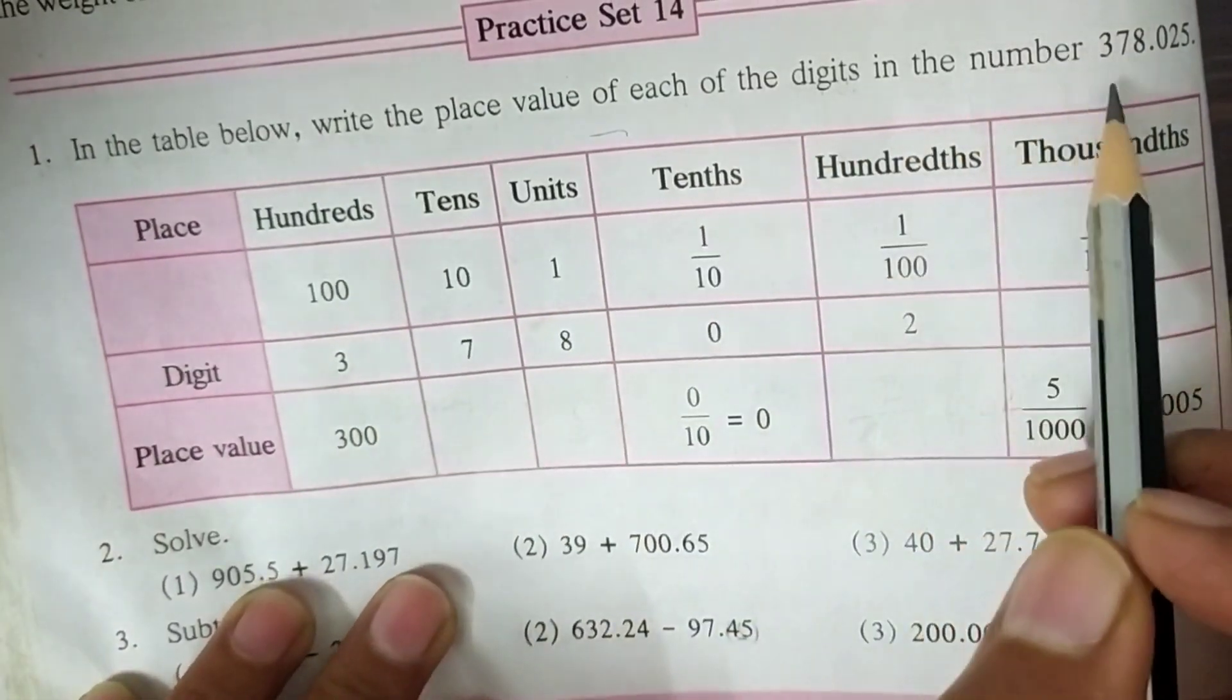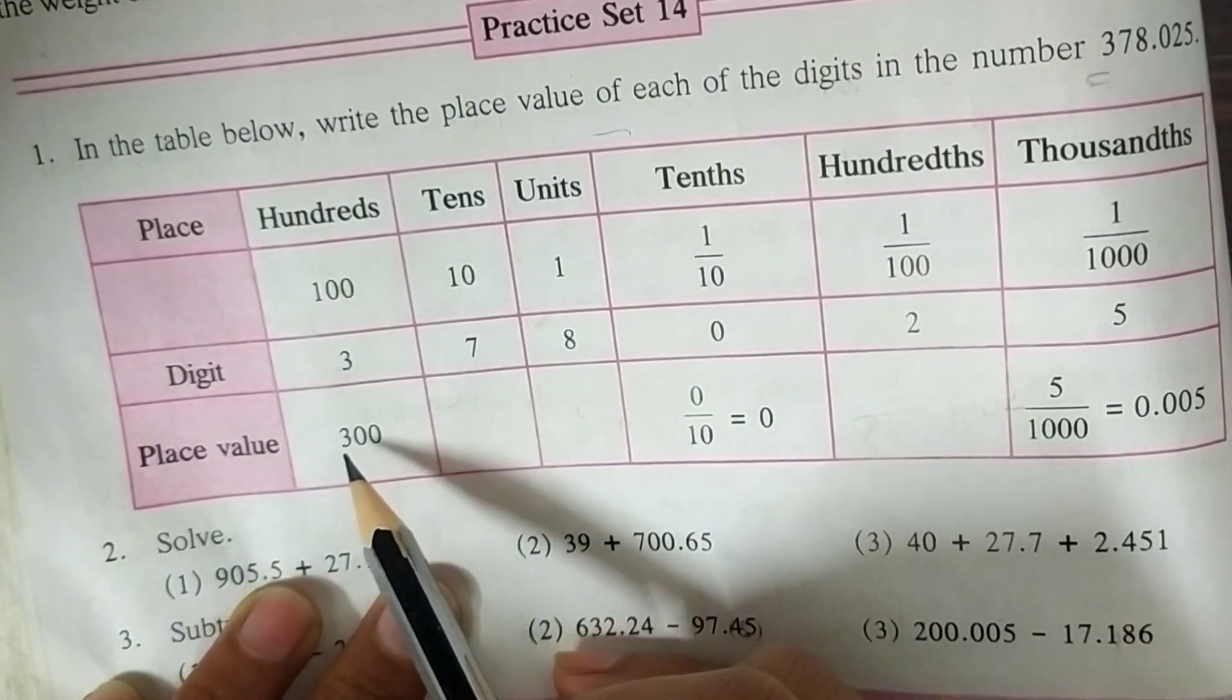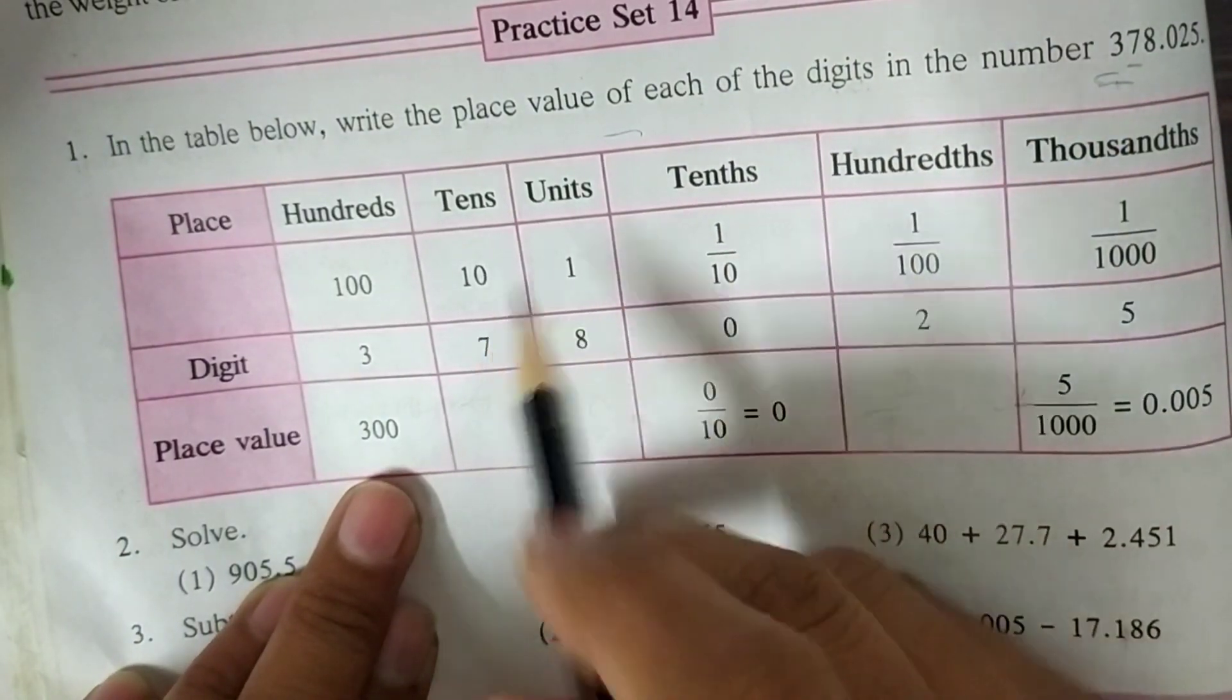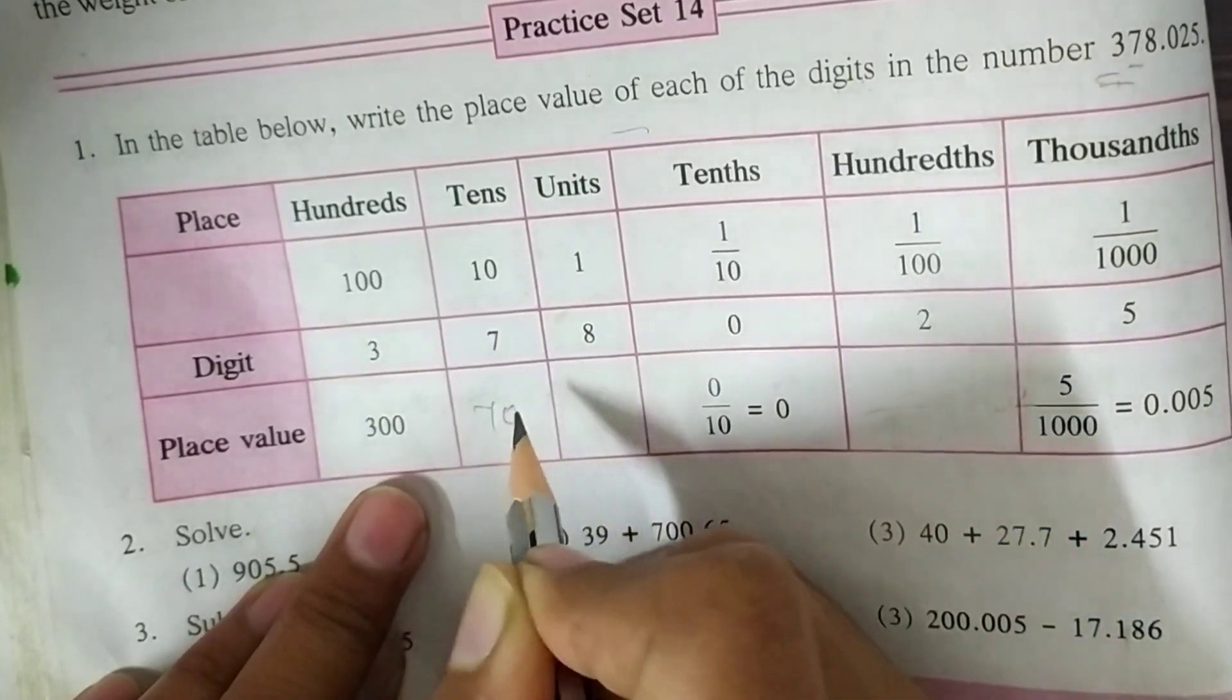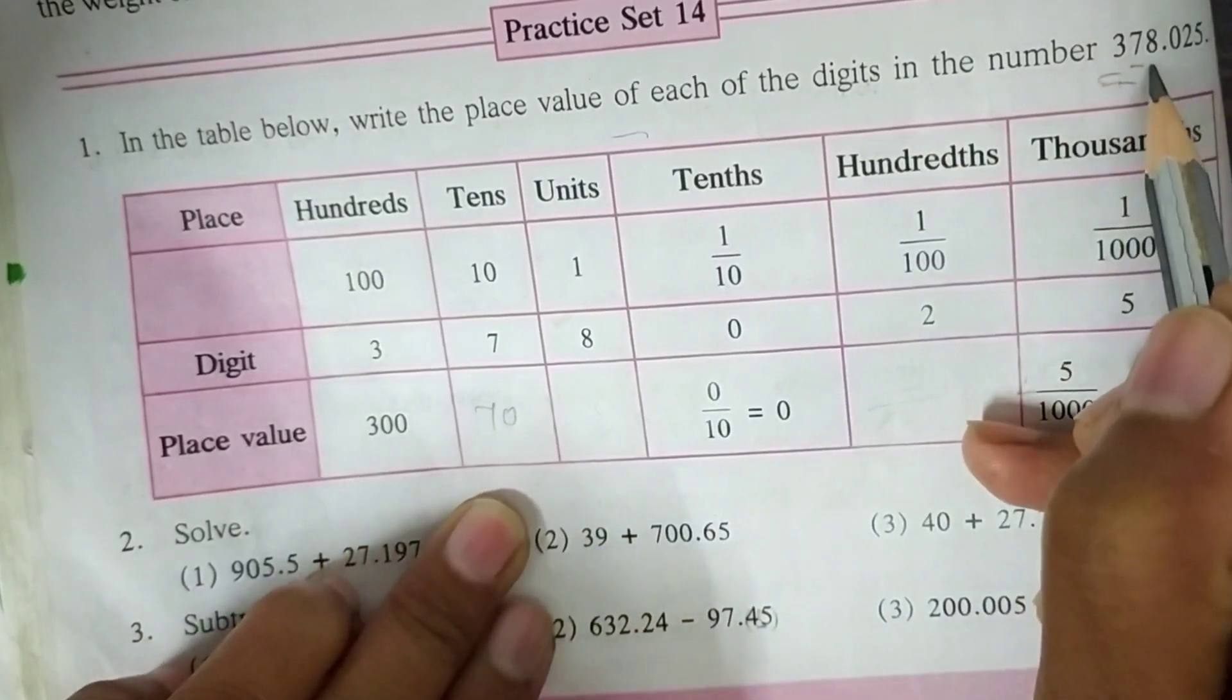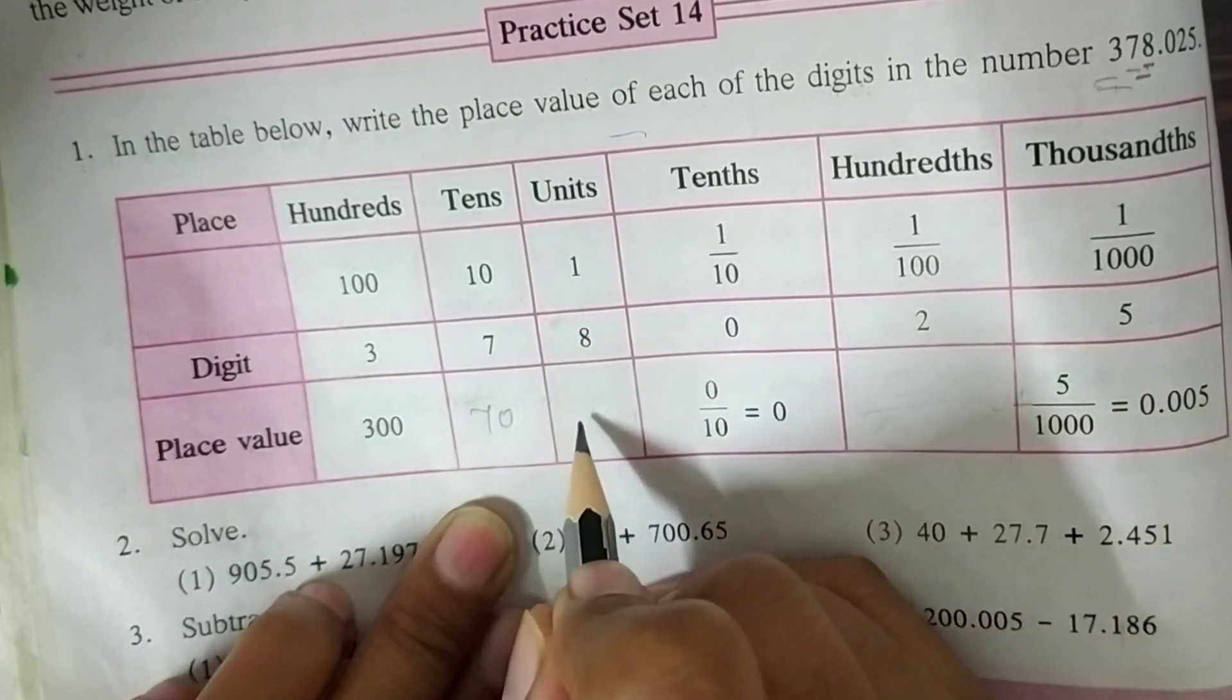In the given number, the first digit is 3 and it is on the hundreds place. So its place value is 300. On tens place, there is a 7 digit and its place value is 10 multiplied by 7, which is 70. Then, for units, the unit has a value of 1. The number on the unit place is 8. Multiply 1 into 8, it's 8.